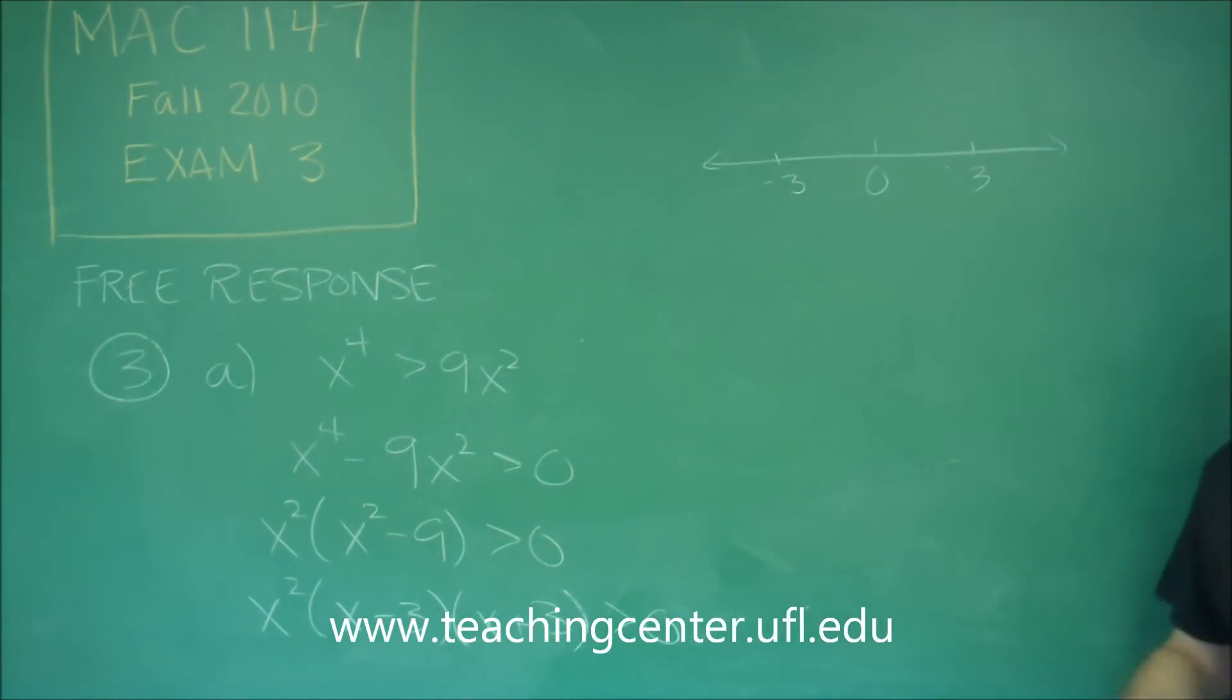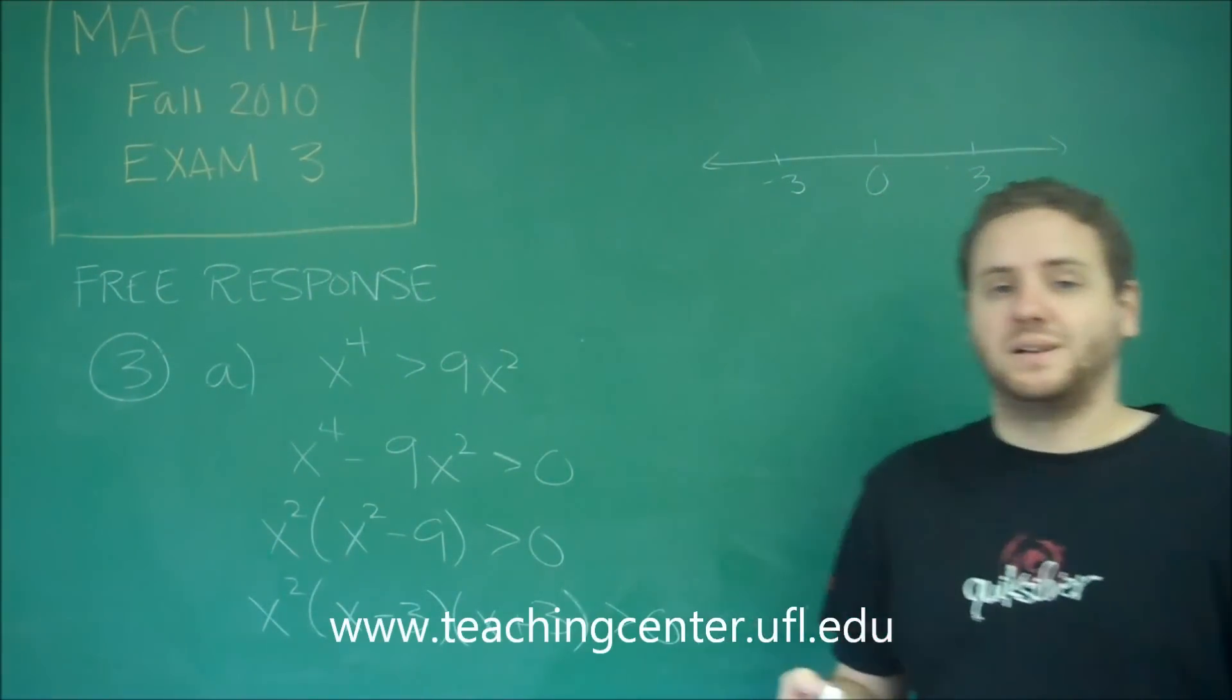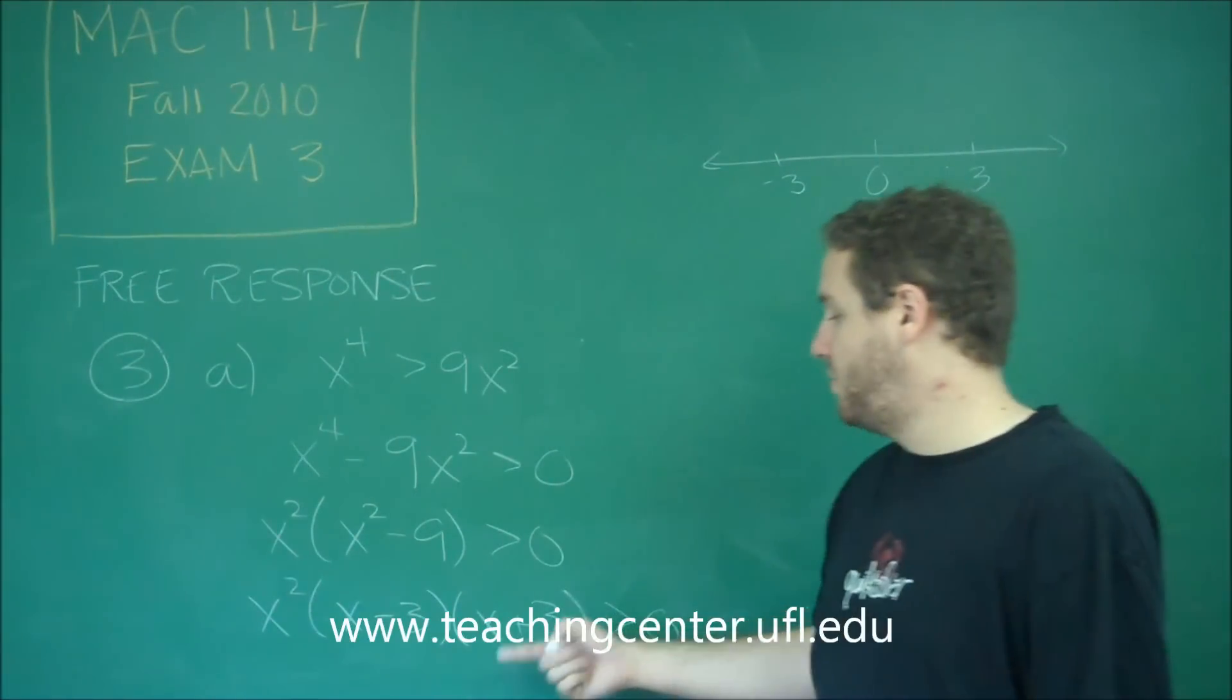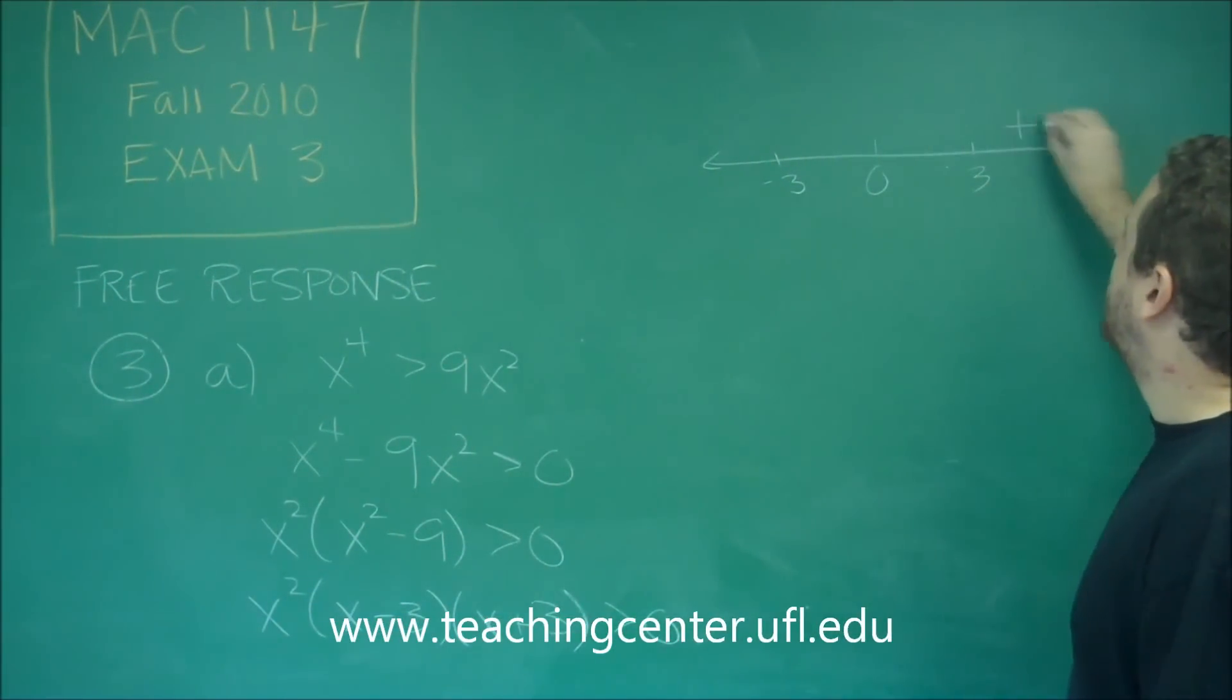So now all we need to do is check places in each range and see if we get a positive answer or not, because we're looking for things that are positive. So if we pick something bigger than 3, remember you don't actually have to figure out the number, you just want to know if it's positive or negative. We have positive for sure, positive, positive. Three positive numbers will always be a positive.